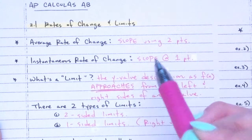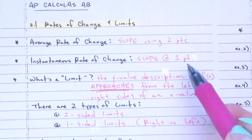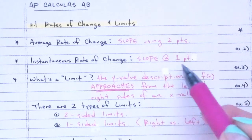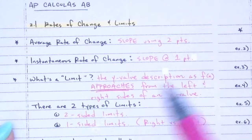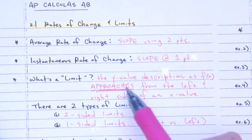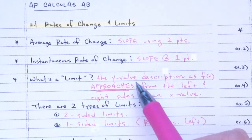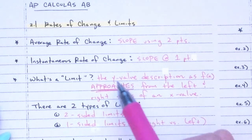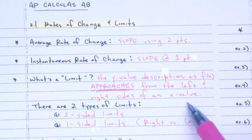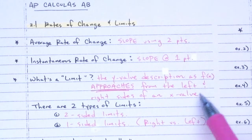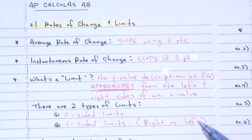An instantaneous rate of change is still slope, but it's the slope at one point. Think about that roller coaster example — it's instantaneous, it changes all the time. A limit is the y value — basically the y value as f(x) approaches from the left and the right side of an x value.